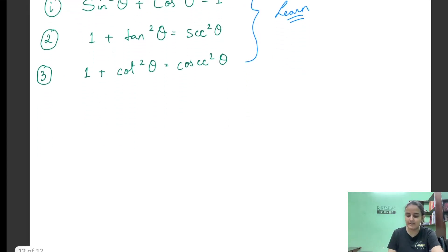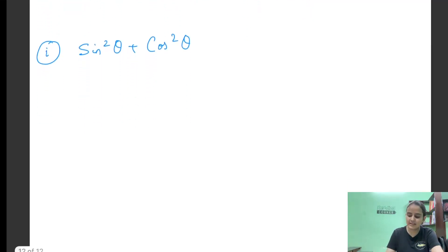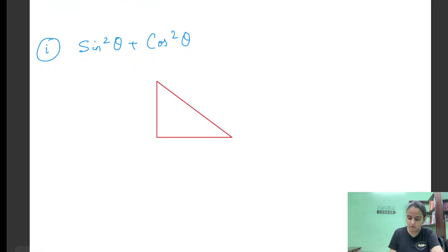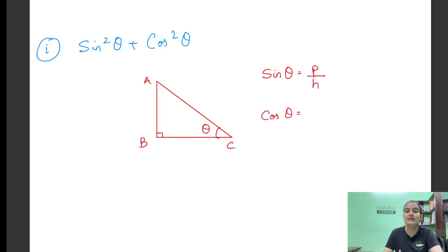तो हम पहले देखते हैं sin²θ + cos²θ = 1 का proof। तो sin²θ + cos²θ की value हमें निकालनी है। हम एकदम basic से जाएंगे — हम एक right angle triangle draw कर लेते हैं। तो यह मान लो angle A है, यह angle B है, और angle C is our theta। तो sin θ = P/H, and cos θ = B/H।